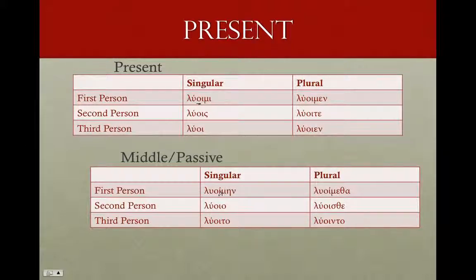In the middle and passive for the present, same thing. We're going to use our theme vowel omicron, add our iota: λυοίμην, λύοισο — that's λύοισο — drop off the sigma and we get λύοιο, λύοιτο, λυοίμεθα, λύοισθε, λύοιντο. Middle-passive secondary endings, with iota as the marker.